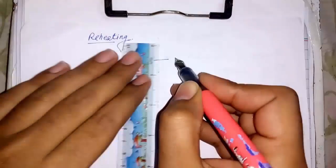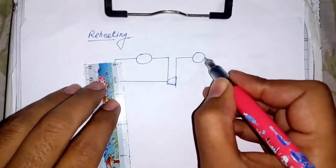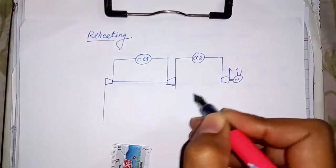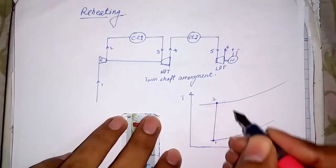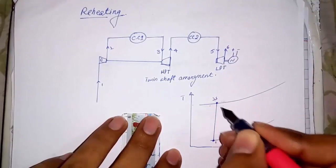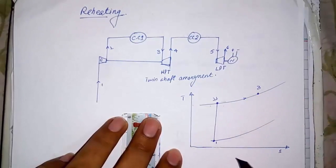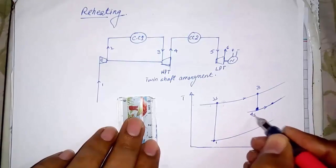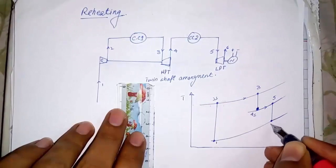Second method is reheating. In this method we use more than one combustion chamber and the same number of turbines. The specific arrangement shown in the diagram is known as the twin shaft arrangement, which is used for the fluctuating loads. First is inlet point, and 1 to 2 is compression. From 2 to 3, compressed gases combusted in first chamber. And after that, 3 to 4, it is expanded in high pressure turbine. In 4 to 5, it is again combusted in second chamber, and at point 6 it is exhausted.